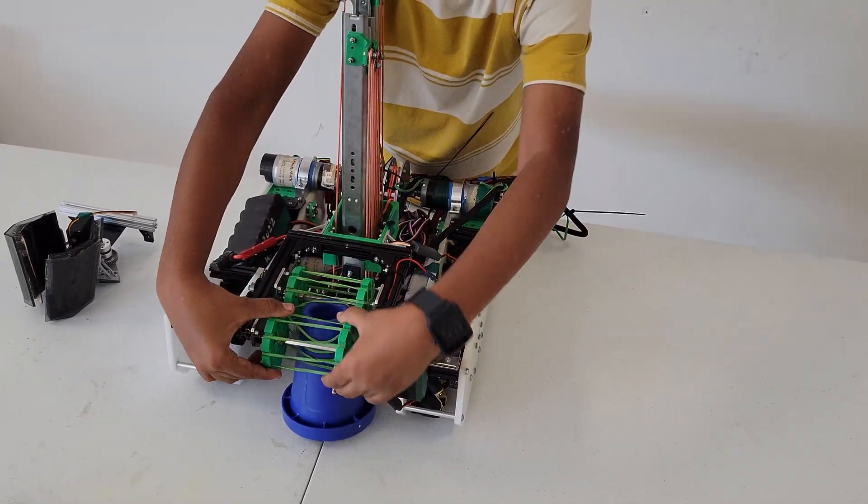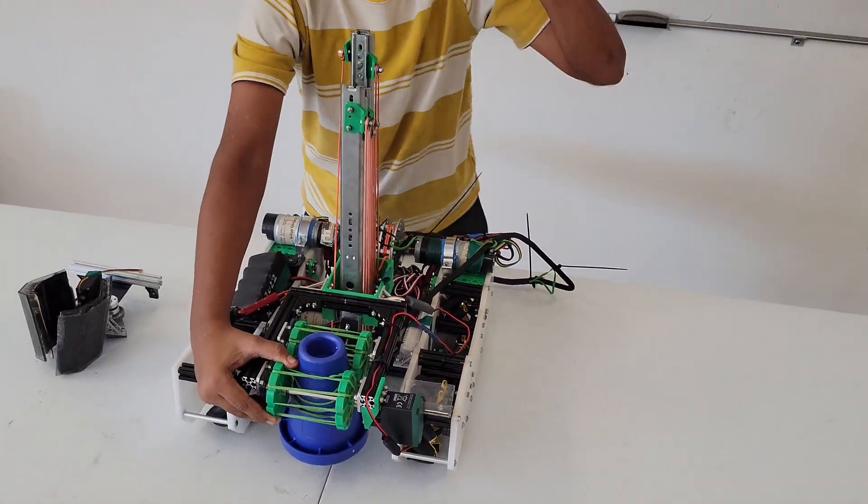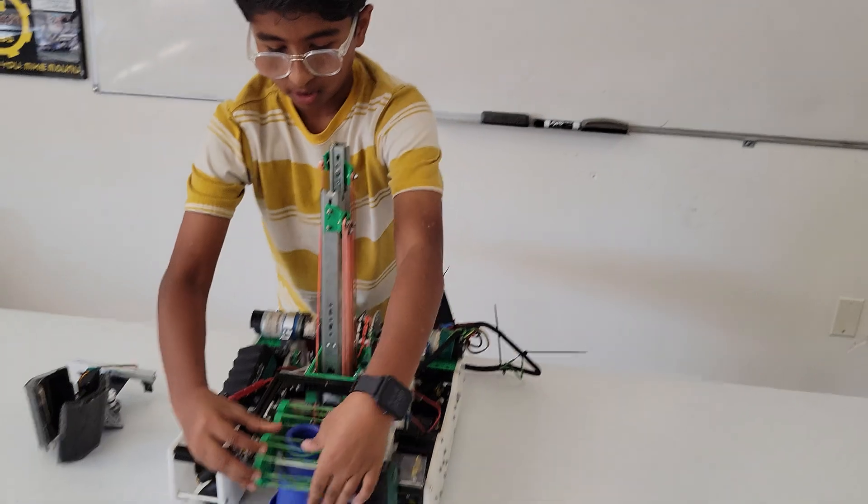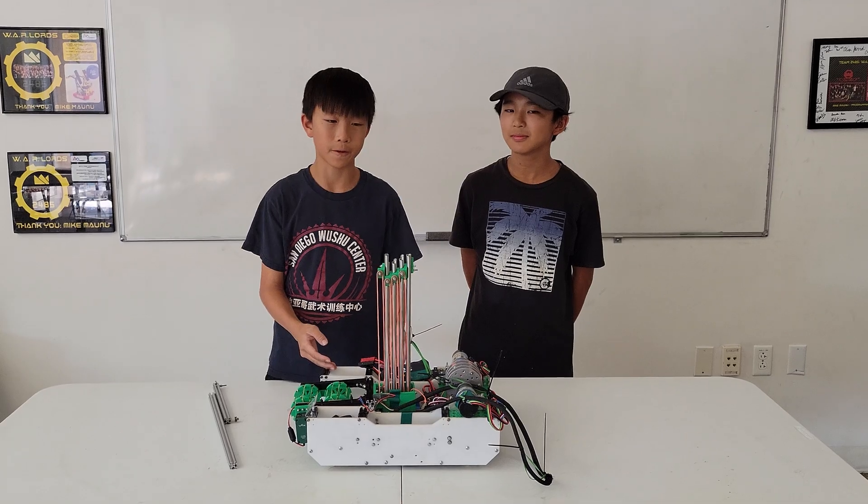These rubber bands suck up the cone and this linear slide moves up all the way to whichever pole we want to go and drop it in by going the opposite way. This is our linear slide for our robot in 30 hours.